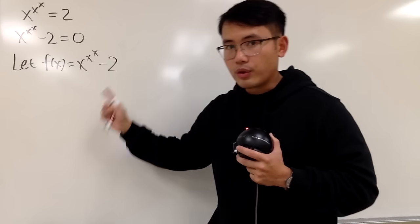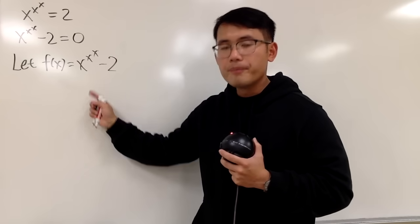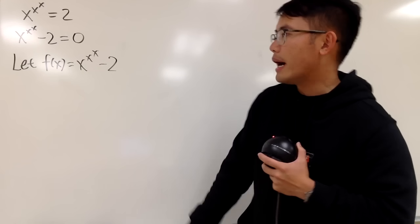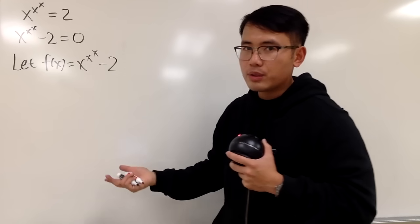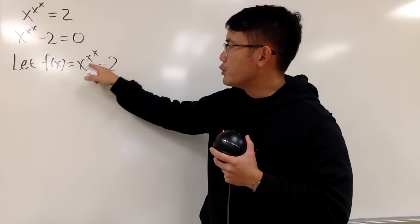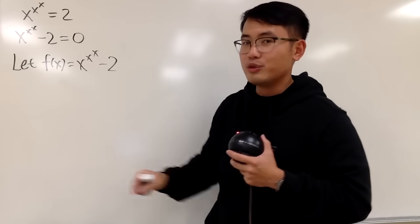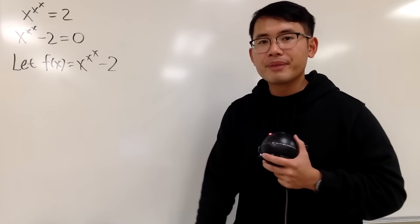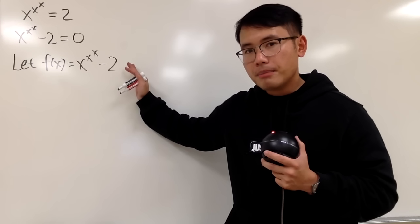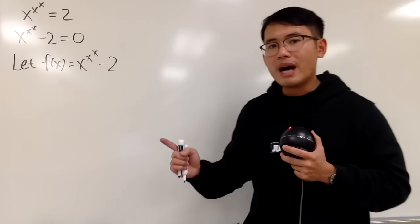And notice, this is continuous, and we can see that we do have a zero between 1 and 2. Why? Because if x is 1, 1 to the 1 to the 1 minus 2 is just negative 1. And when x is 2, 2 to the 2 to the 2—you do 2 to the 2 first, which is 4, and then 2 to the 4, which is 16, minus 2 is 14. Positive. So by intermediate value theorem, this does have a solution between 1 and 2.